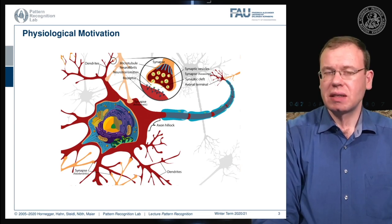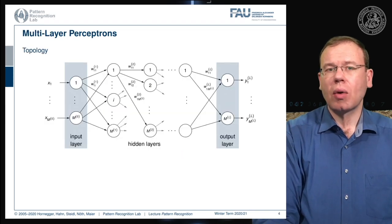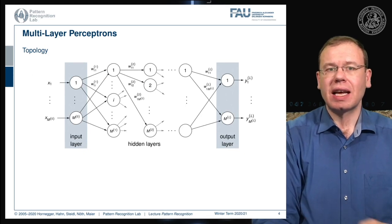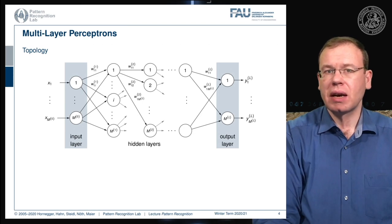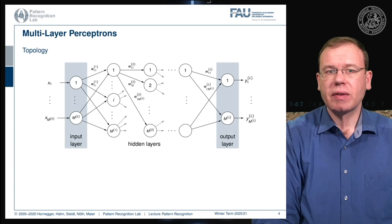We don't talk about biological neurons here, but rather mathematical ones based on the perceptron. We can arrange them in layers on top of each other. We have input neurons carrying the input feature vector and a bias indicated with one, and this is then passed in a fully connected approach — connecting everything with everything.